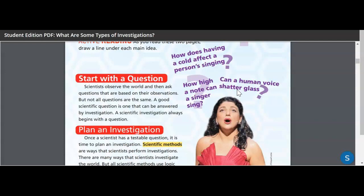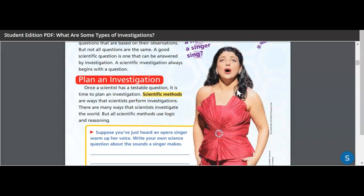Scientists observe the world and then ask questions that are based on their observations, but not all questions are the same. A good scientific method is one that can be answered by investigation. You're doing an investigation, you're breaking it down and looking at each piece. A scientific investigation always begins with a question. Plan an investigation. So you have to plan it next. Once you ask your question, you get this testable question. Now you have to plan it. Now, it's giving you a highlighted vocabulary word that's important. It's the scientific methods. Scientific methods are ways that scientists perform investigations.